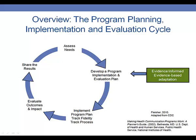Typically, the cycle starts by assessing your community needs. We'll teach you more about how to do this in chapters 2 and 3. With chapters 4, 5, and 6, we'll start talking about how to develop your program implementation and evaluation plan by creating very clear goals and objectives and assessing the resources that you currently have in place.